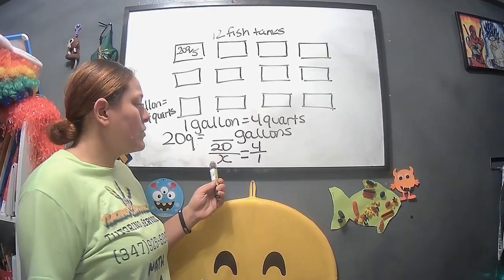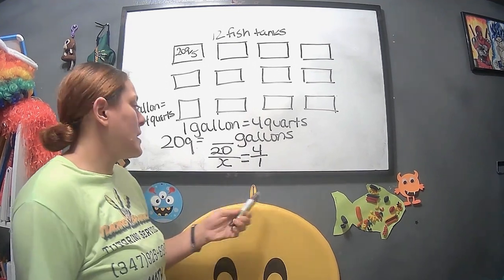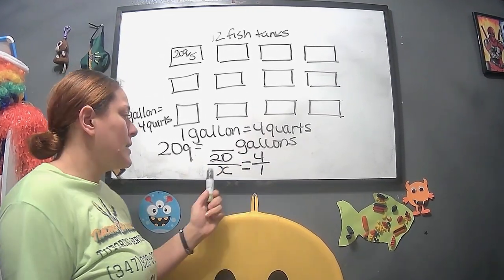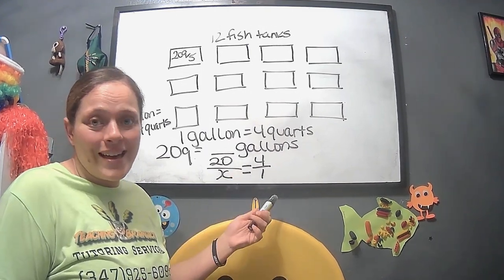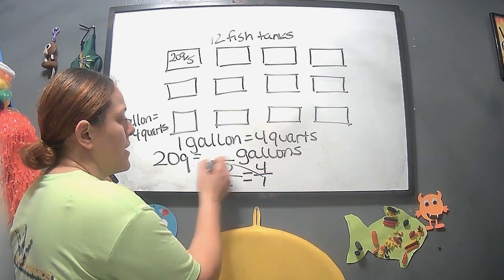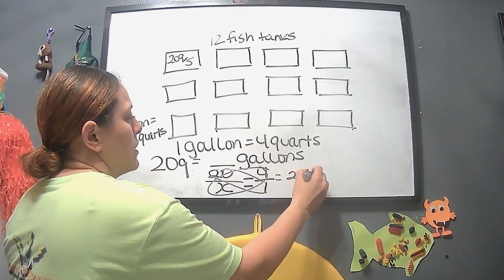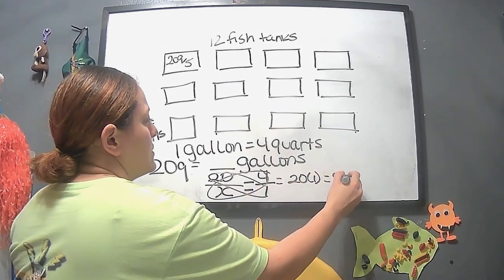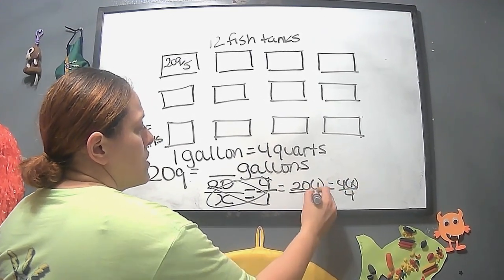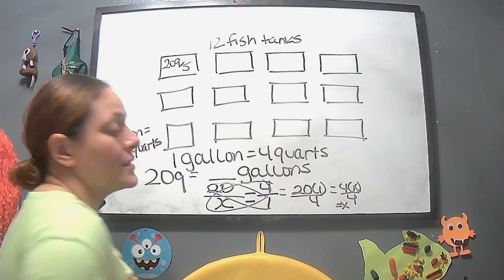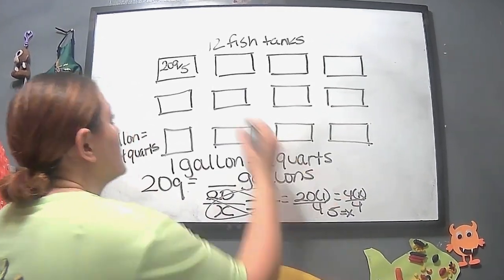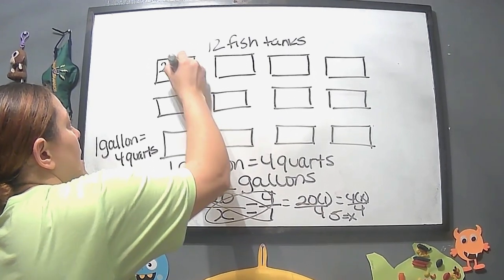All right, so here we did 20 over x equals 4 over 1. Reason being is that the 20 to 4, it has to do with the quarts, and the x and the 1 are the gallons. So we want to put like things together. So when we cross multiply, that would be 20 times 1 equals 4 times x, which is 4x divided by 4, that would give us 20 divided by 4, which is 5. So that means each of these is 5 gallons.